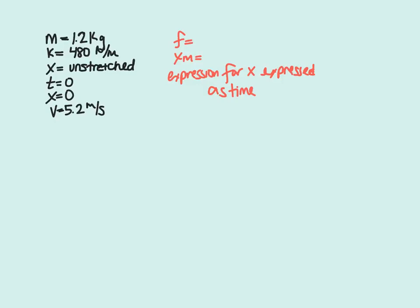For this problem, we are given the scenario where there's a 1.2 kilogram block sliding on a horizontal surface with a horizontal spring attached. The spring has a spring constant of 480 newtons per meter. At time t equals 0, the block passes through x equals 0 with a speed of 5.2 meters per second in the positive direction.